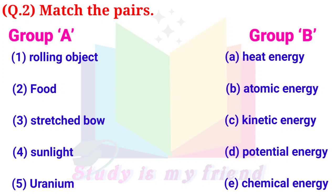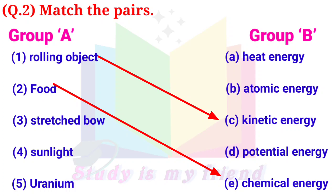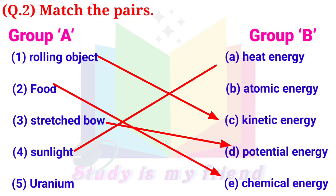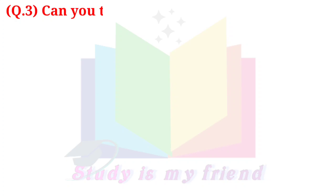Answers: 1. Rolling object — C. Kinetic energy. 2. Food — E. Chemical energy. 3. Stretched bow — D. Potential energy. 4. Sunlight — A. Heat energy. 5. Uranium — B. Atomic energy.